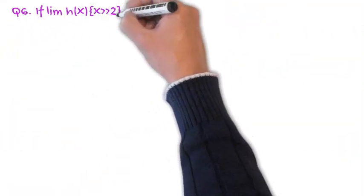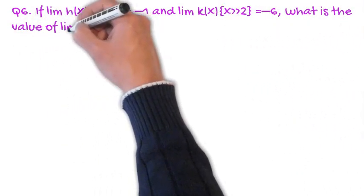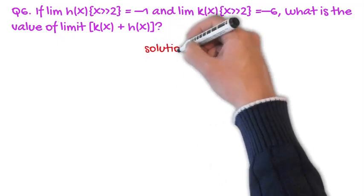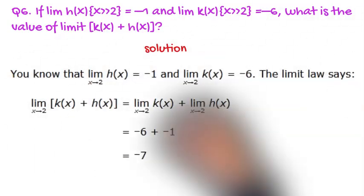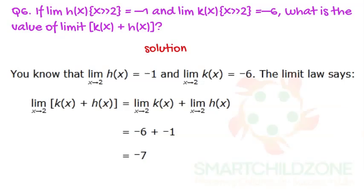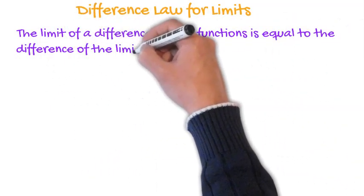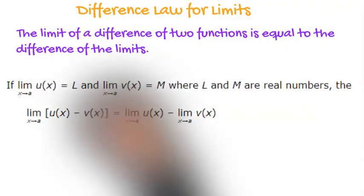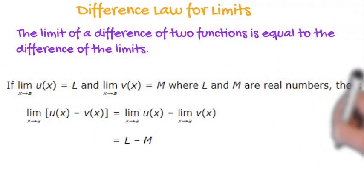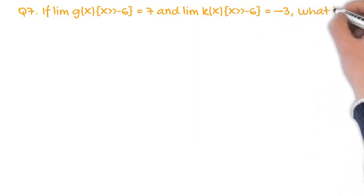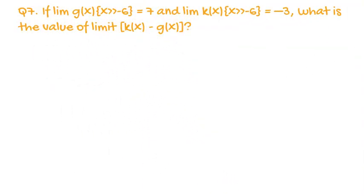If the limit of h(x) as x approaches two equals minus one and the limit of k(x) as x approaches two equals minus six, what is the value of the limit of k(x) plus h(x)? The limit of a difference of two functions is equal to the difference of the limits. If the limit of g(x) as x approaches minus six equals seven and the limit of k(x) as x approaches minus eight equals minus three, what is the value of the limit of k(x) minus g(x)?